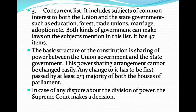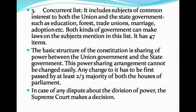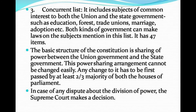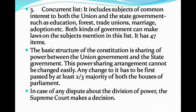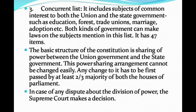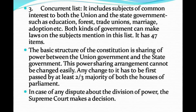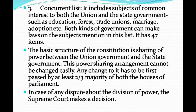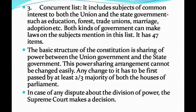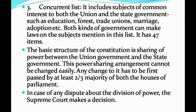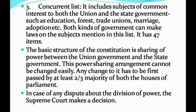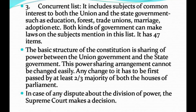The Concurrent List has 47 items. The basic structure of the constitution is the sharing of power between the union government and the state government. This power-sharing arrangement cannot be changed easily. Any change must first be passed by at least a two-thirds majority of both houses of parliament. In case of any dispute over the division of power, the Supreme Court makes the decision.